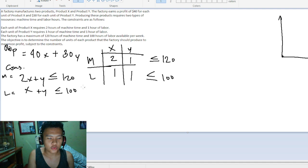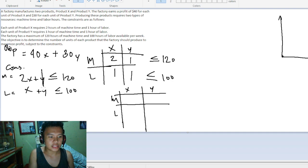We have 2x plus y. To find the x value, we let y equal zero. So 2x equals 120. Divide both sides by 2, we get x equals 60.